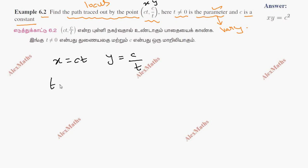Eliminate. First equation: t equals x over c. Second equation by cross multiplication. From equations 1 and 2.